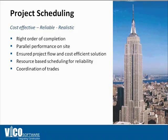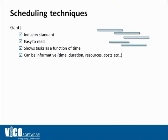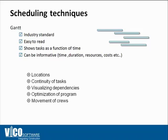So how did they do it? What was the concept behind it? Gantt charts are very useful and easy to read. However, they're pretty hard to manipulate. They show tasks and activities as a function of time. They can be pretty informative, but they're not showing a lot of information that's critical to the success of a construction project.